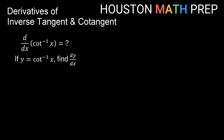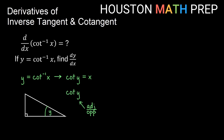We'll briefly work through the same process for inverse cotangent of x. We think of y equals inverse cotangent of x as cotangent of y equals x. Setting up our right triangle, cotangent is the reciprocal of tangent, so cotangent of y is adjacent over opposite. Thinking of x as x over 1, the opposite side is 1 and the adjacent side is x. Using the Pythagorean theorem, we again get a hypotenuse of the square root of 1 plus x squared.